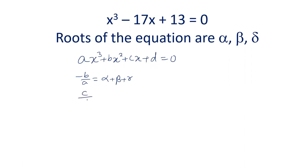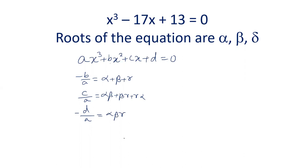We are establishing the relation of the coefficients with the roots. c by a is alpha·beta + beta·gamma + gamma·alpha. And minus d by a is the product of the roots alpha·beta·gamma.